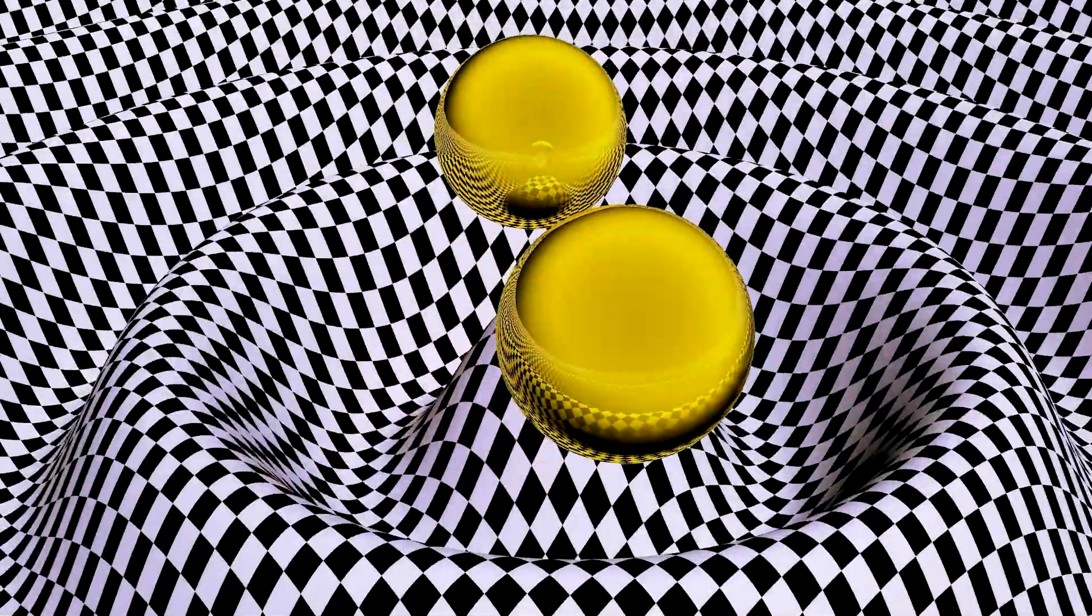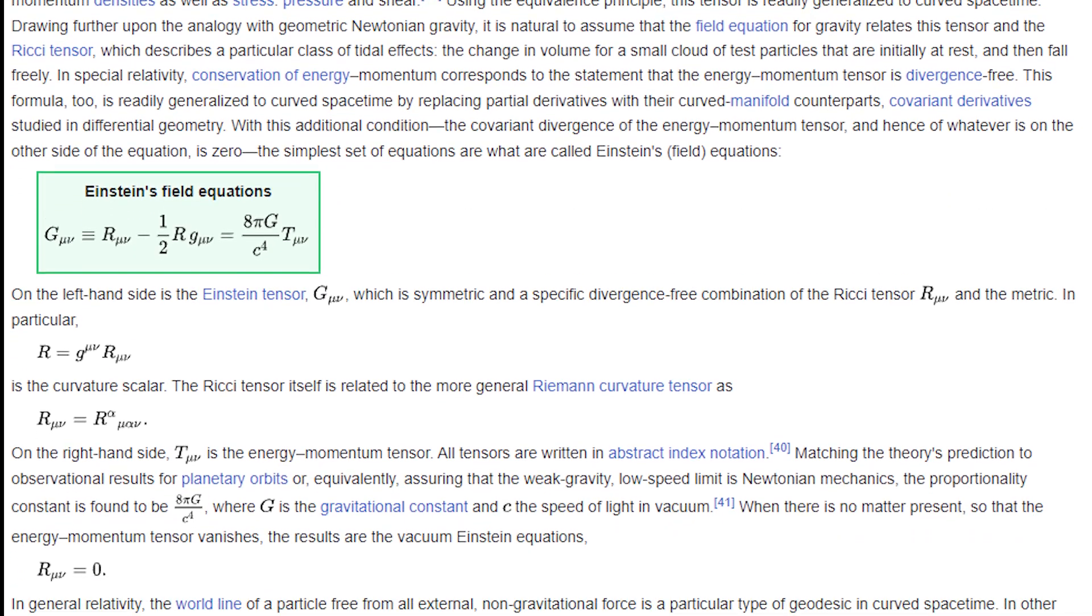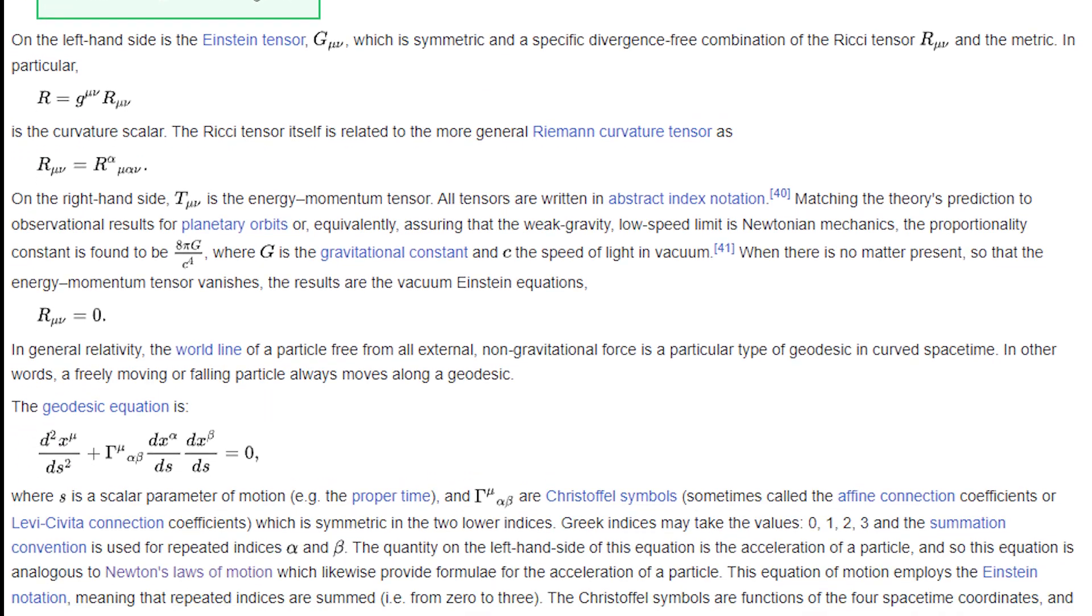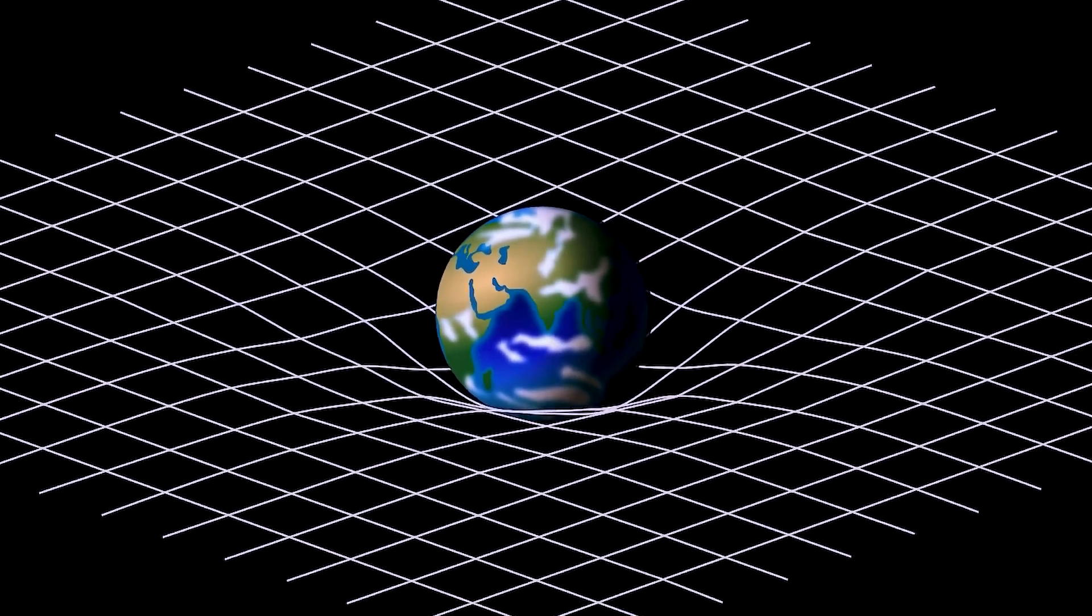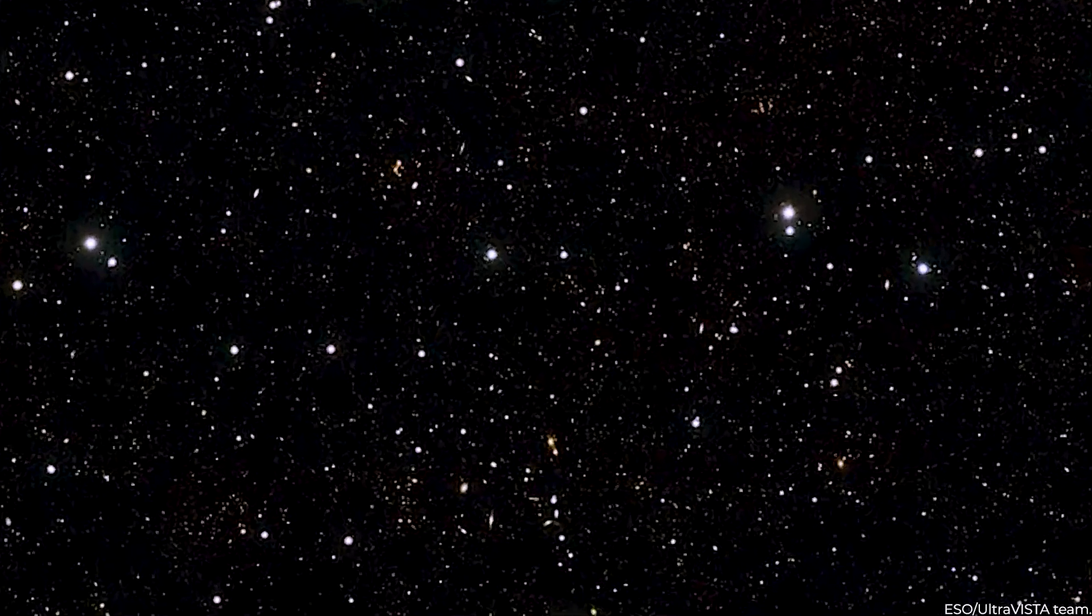In general relativity, one must first solve Einstein's equations for a specific circumstance to identify the associated structure of space-time, and then solve a second set of equations to predict a particle's path.